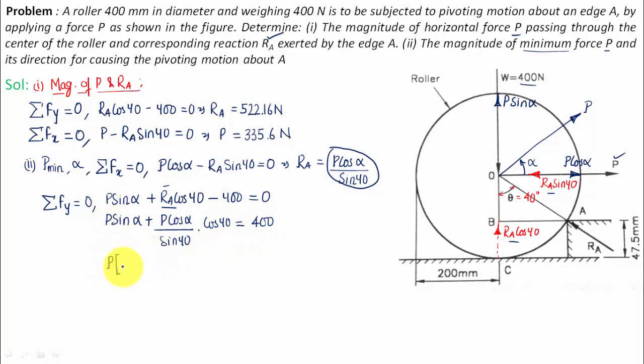Now in the next step I'll take P as common. I'll just write sin alpha plus cos alpha dot cos 40 by sin 40 will be cot 40, so cos alpha cot 40 is equal to 400. And finally you can write P something like this: P is equal to 400 divided by sin alpha plus cos alpha dot cot 40. That's it.